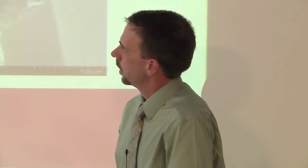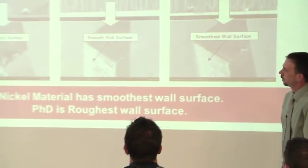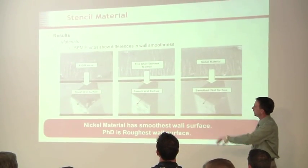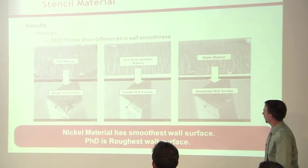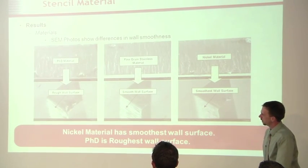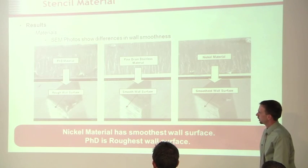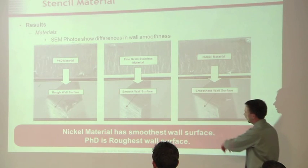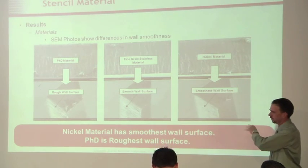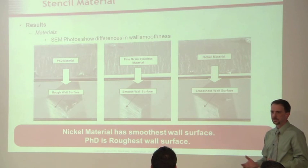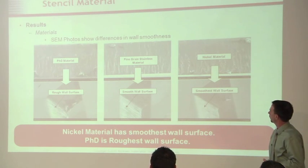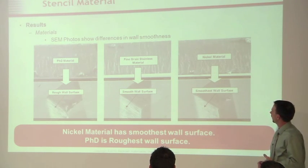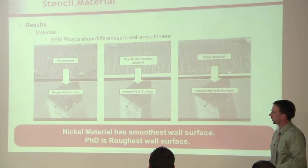Getting into some of the results, we looked at the surface of the different apertures. You can see here the three different materials: the PHD material on the far left, fine grain in the middle, and nickel on the right. It's apparent that the PHD has a much rougher wall surface than the fine grain, and the fine grain is rougher still than the nickel. So the nickel did indeed have the nicest, smoothest surface wall — which is what we expected. Therefore, we would expect the nickel material to release better.